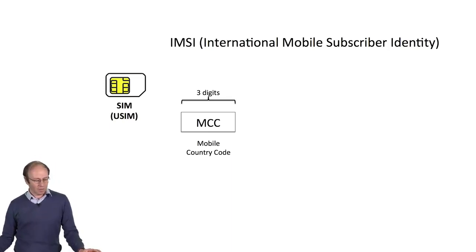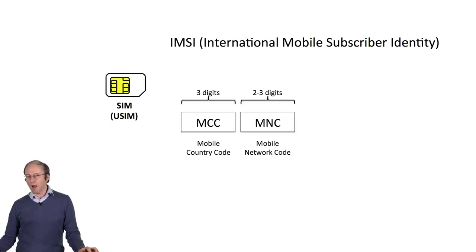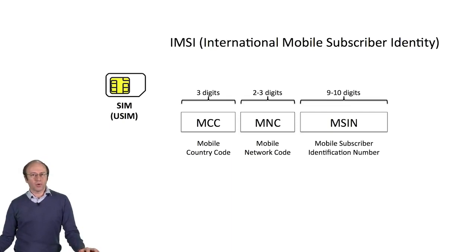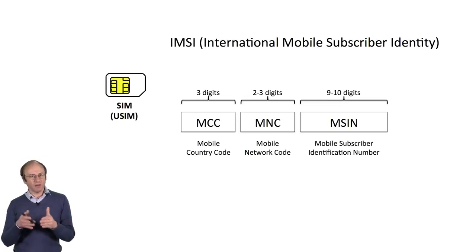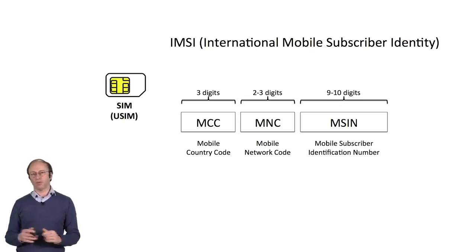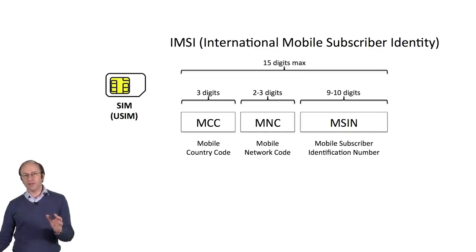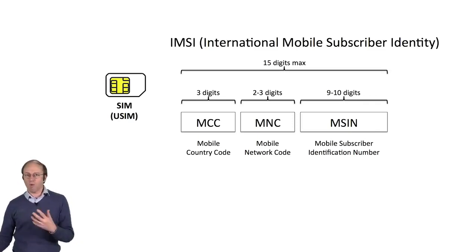After that is the MNC, mobile network code, which is the code of the network in the country. Then a number allocated by the operator — two subscribers of the same network never have the same number. The result is an identity of 15 digits maximum, which is unique throughout the world.